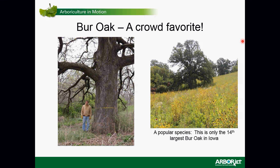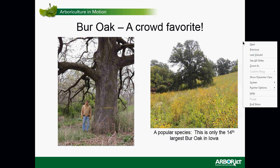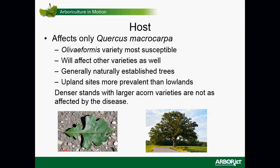They planted native prairie around this particular tree just to try to reduce competition from turf — that's how concerned they are about the health of that tree. The host is Quercus macrocarpa; generally it affects native bur oaks. The oliviformis variety is the most susceptible — that's the one with the smaller acorns. The bur oak is in the white oak family, with that very broad lobed leaf.